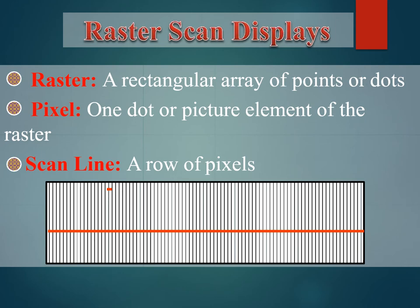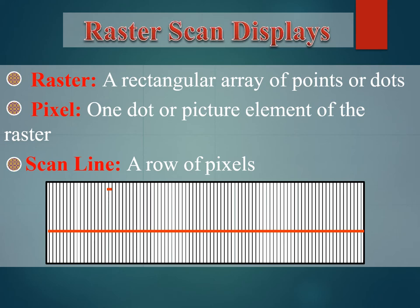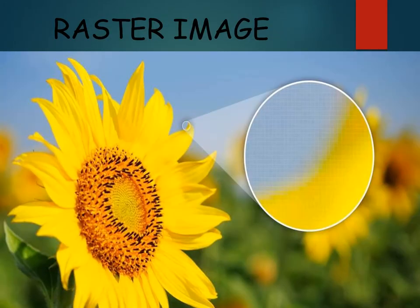Key terms: Raster — a regular array of points or dots. Pixel — one dot or picture element. Scan line — a row of pixels. The figure shows the raster image of a flower; the encircled part is the raster image subdivided into scan lines.